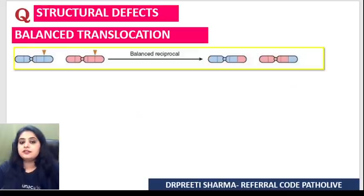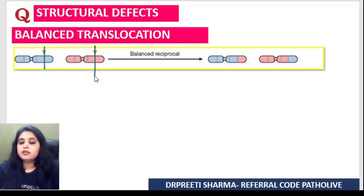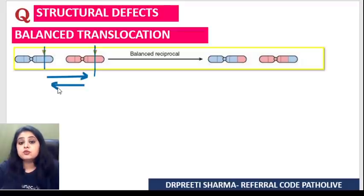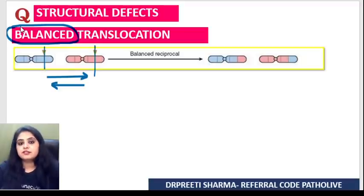Coming to the next: translocation. What I see here is a proper give and take. If there's a break in one chromosome and a break in another, one chromosome gives some material to the other and gets something in return. This two-way exchange — balanced — is called a balanced translocation.